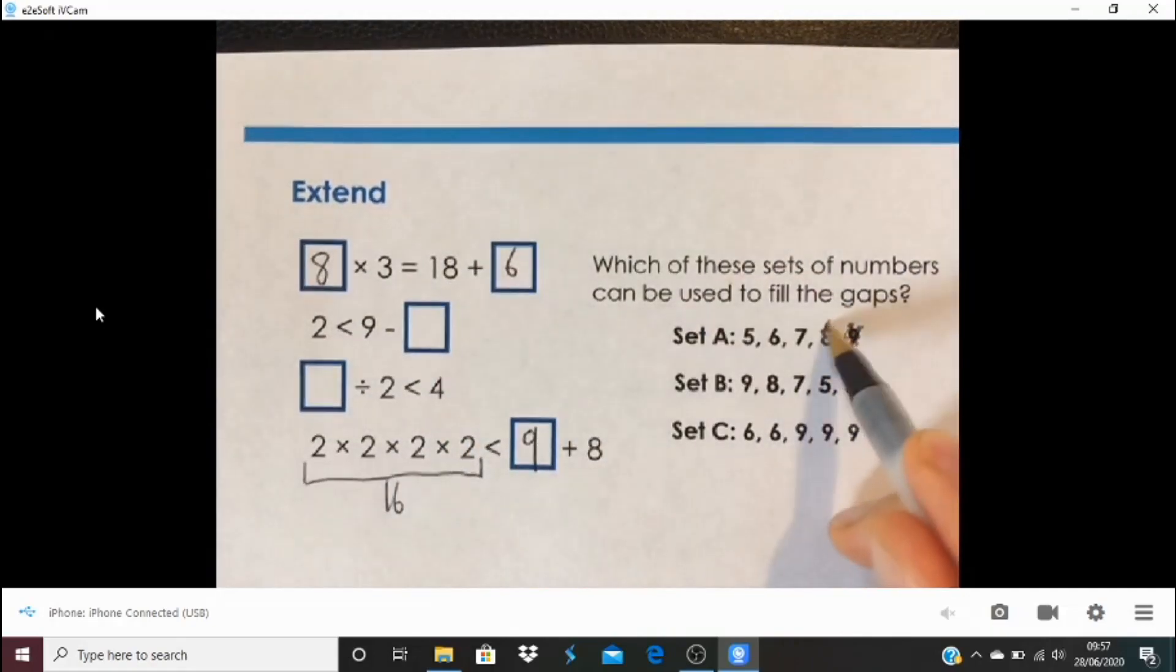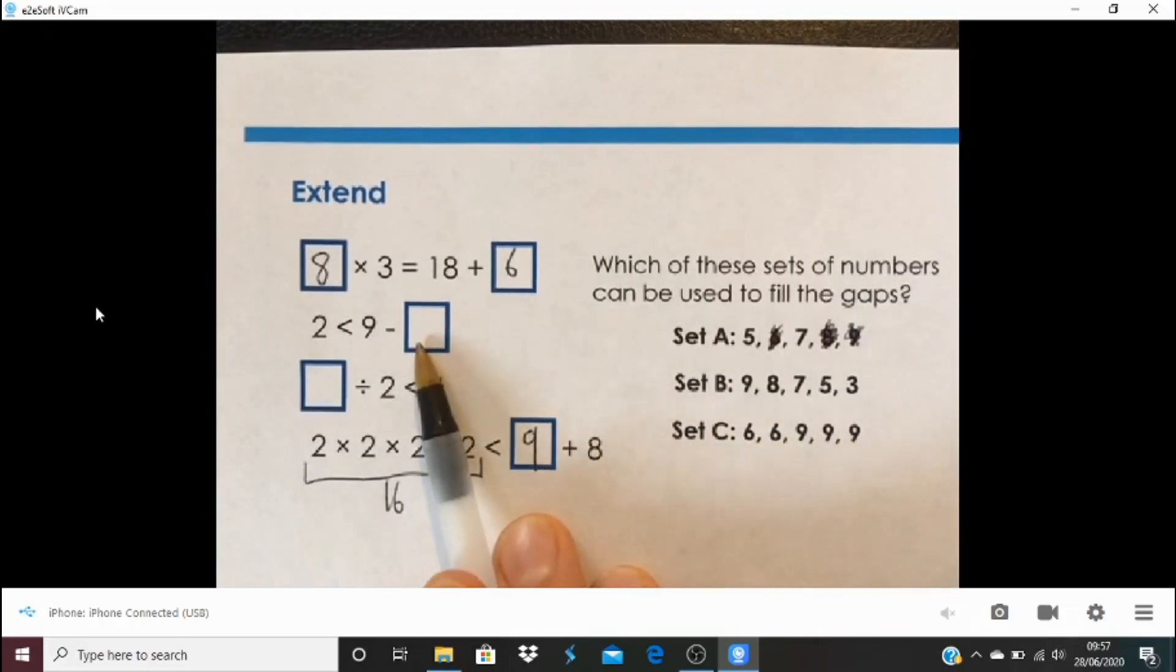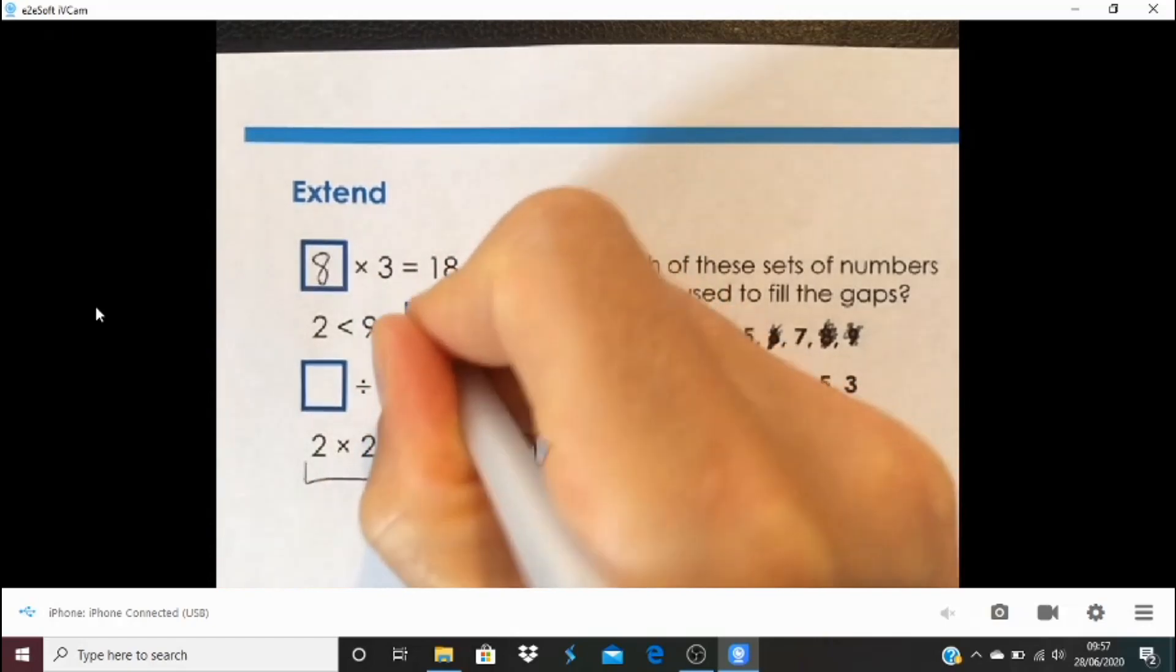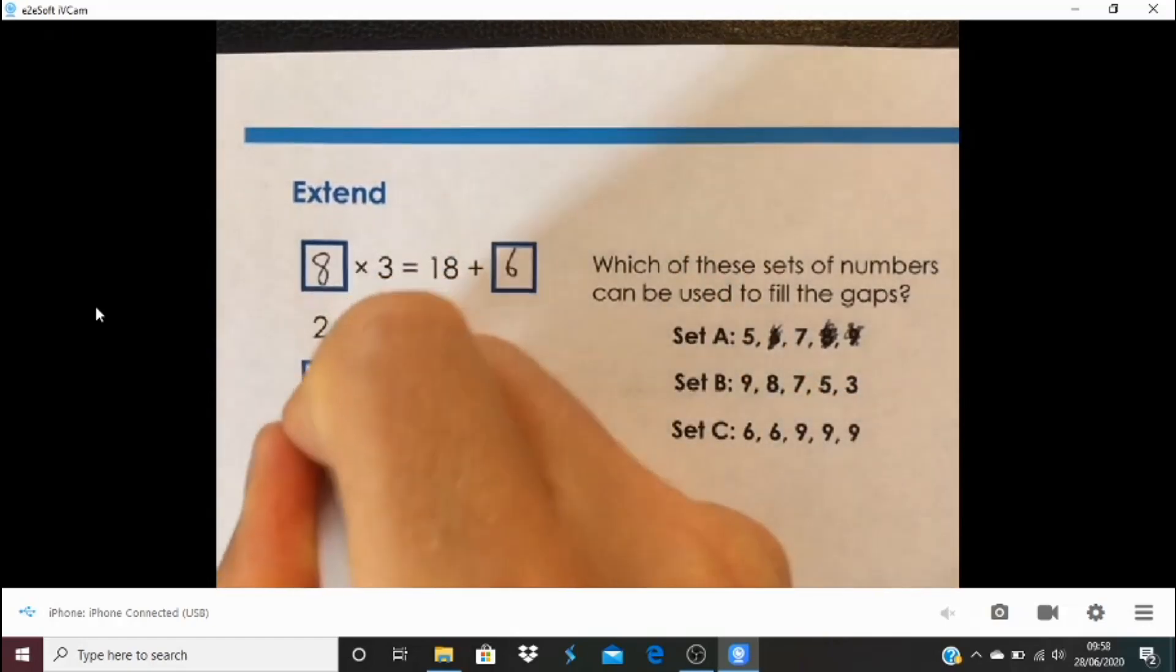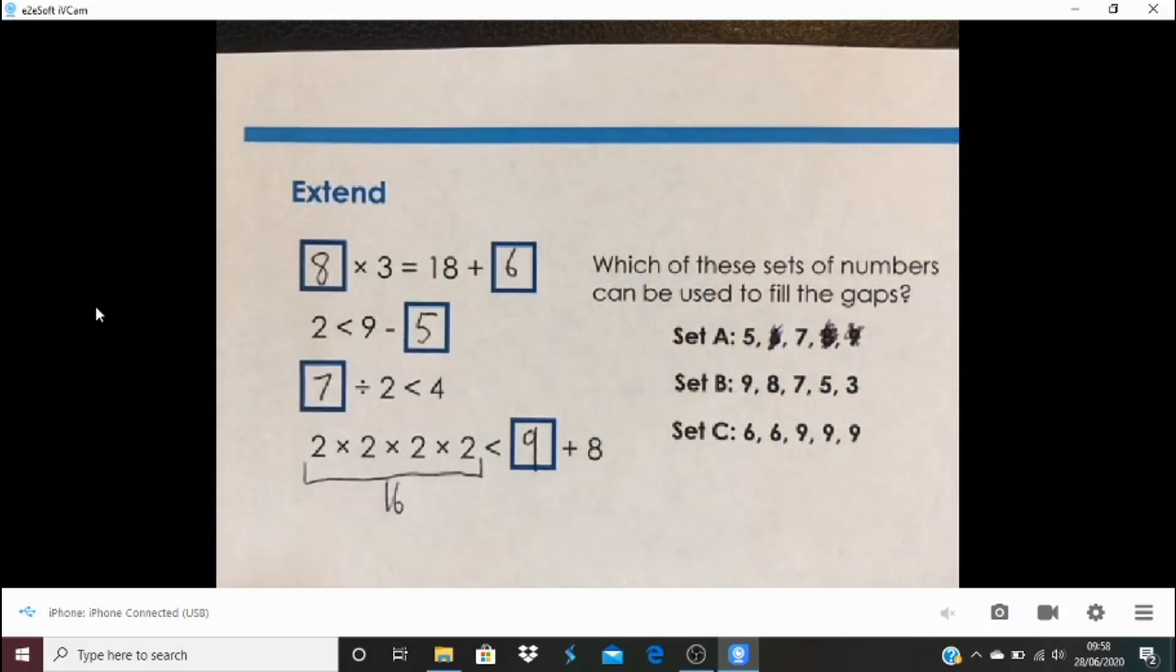So this time, rather than, I'm thinking, well, where is the only place that the 8 can go? And it's there. So that leaves us with a 5 and a 7. Well, I know that the 7 can't go there. So then the 5 would have to go there. And then 7 divided by 2, well, that is actually less than 4. So set A, there we go. Set A, we can use that.